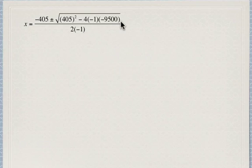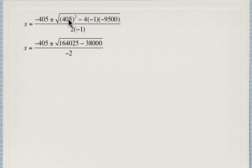And we end up with basically this mess, but just watch all your signs and make sure you substitute in carefully. I would double, triple check when you do this on your calculator. So I'm simplifying it a little bit. 405 squared is 164,025. And remember we've got a minus, a negative times a negative, which is going to be a positive. So this is positive 38,000. So minus 38,000. And 2 times negative 1 is negative 2.